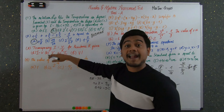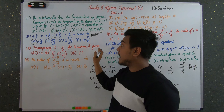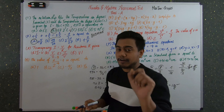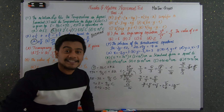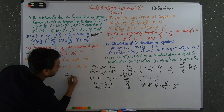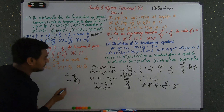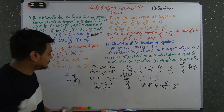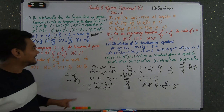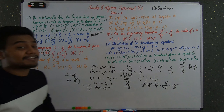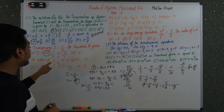Question three is based on transposition of a formula: transpose I = V/R to make R the subject. You may recall from science this is Ohm's Law. Starting from I = V/R, we get V = IR, and therefore R = V/I. Option B is the correct answer for question three.